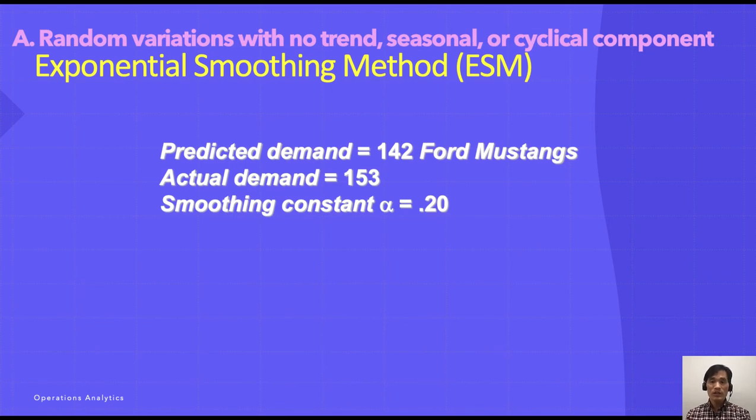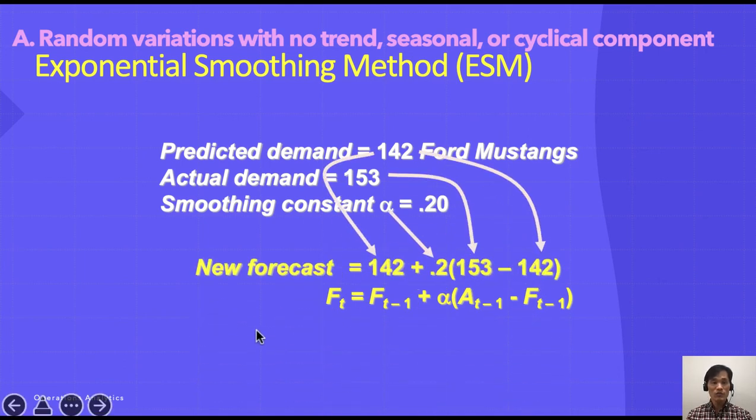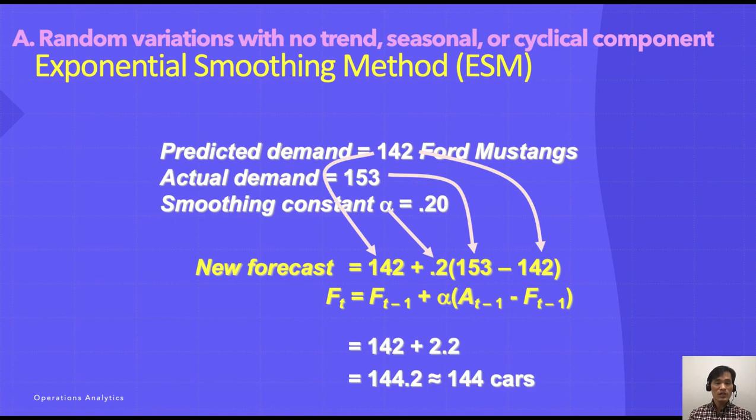Take a look at this example. Given that predicted demand is 142 Ford Mustangs and actual demand is 153, and smoothing constant alpha is 0.20, we can plug this into the formula. What you find is 142 previous forecasting plus the smoothing constant alpha 0.20 times, in parenthesis, 153 actual demand minus 142 forecast from previous period. That will produce 144.2, so about 144 cars as your forecast.